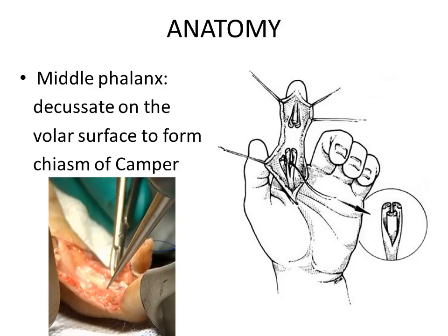At the level of the proximal phalanx where the FDS decussates around the FDP, this is called Camper's chiasma. Camper's chiasma is how the FDS splits into two, embraces the FDP, and goes beneath the FDP, allowing the FDP to come out superficially from its depth so as to facilitate its insertion into the distal phalanx.